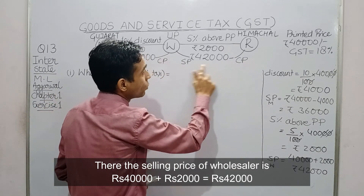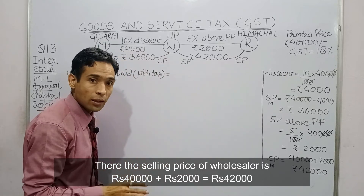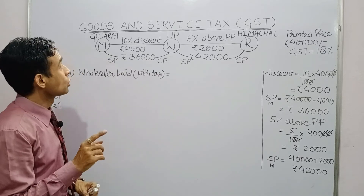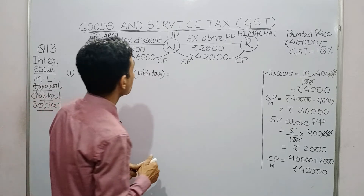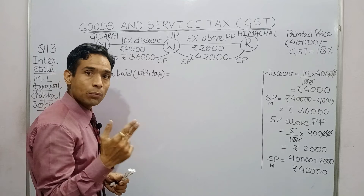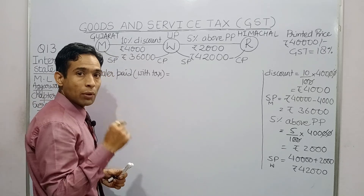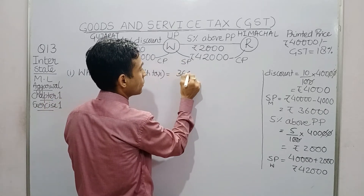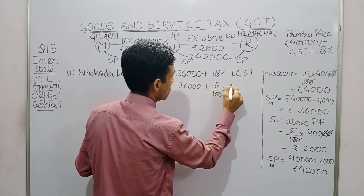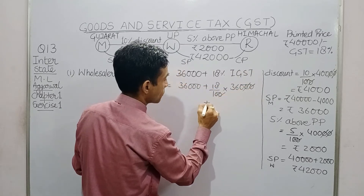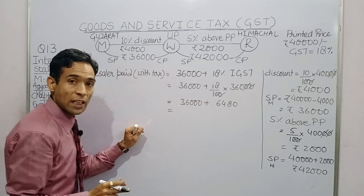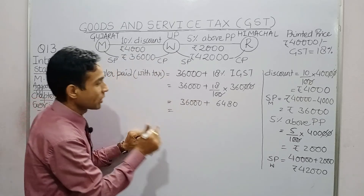The first part asks us to find the amount paid by the wholesaler inclusive of tax to the manufacturer for the article. The purchasing price is ₹36,000. We apply 18 percent IGST directly, which goes to the central government. The price paid by the wholesaler to the manufacturer is ₹42,480 rupees.